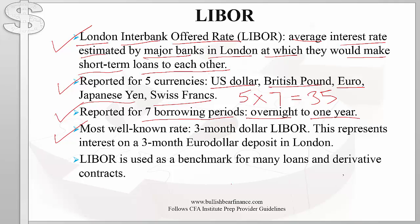Perhaps the most well-known LIBOR rate is the three-month dollar LIBOR, which represents interest on a three-month eurodollar deposit in London. This is called a eurodollar because it refers to a dollar deposit being held outside the US — London in this case. And because it is in London, we have LIBOR on the US dollar, or eurodollar. You can also have other LIBOR rates, such as one-year LIBOR on Japanese yen or one-month Swiss francs.